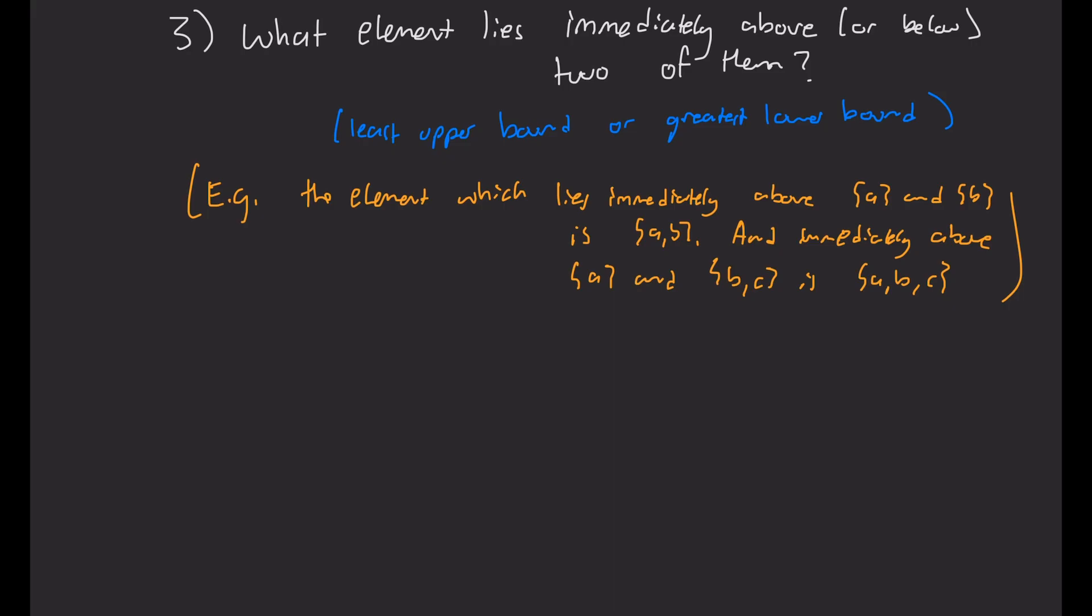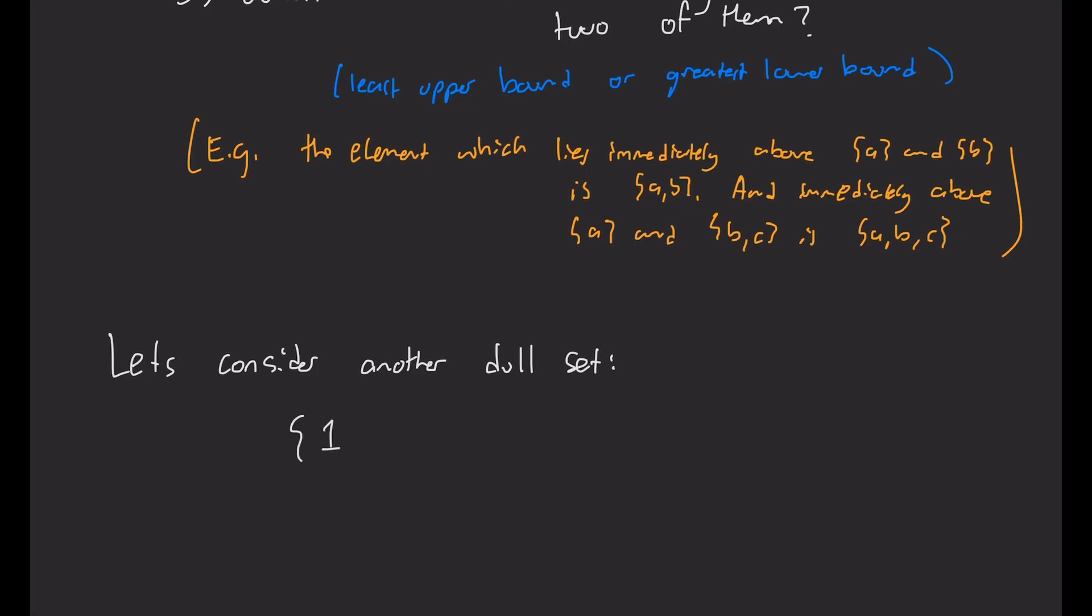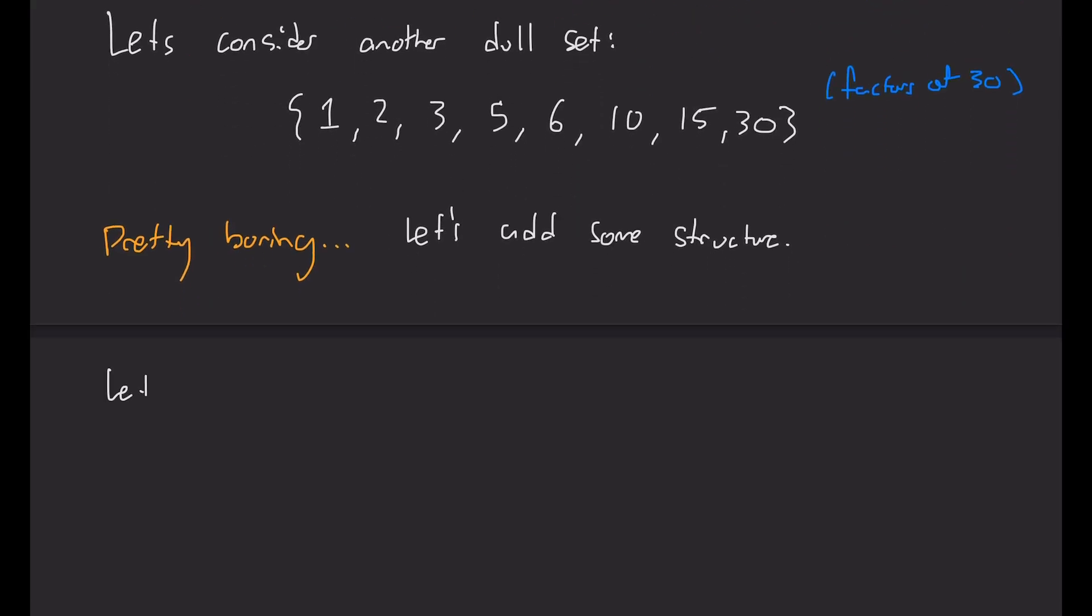Okay, I'm going to switch gears slightly, and I want to look at another dull looking set. And that's going to be the set containing 1, 2, 3, 5, 6, 10, 15, 30. And you might recognize that these are all the factors of 30. And again, this is another one of these boring sets. It's just a collection of numbers. It doesn't really mean much. So let's add some interesting structure.